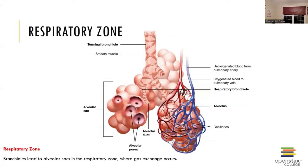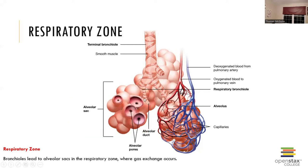Each tertiary bronchus delivers air to a single bronchopulmonary segment, and that branches repeatedly to give rise to microscopic passageways called bronchioles. Bronchioles are very tiny, and they lead to the alveolar sacs in the respiratory zone, where gas exchange occurs.